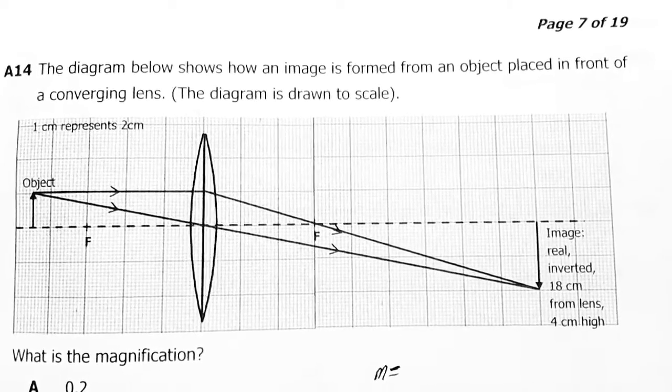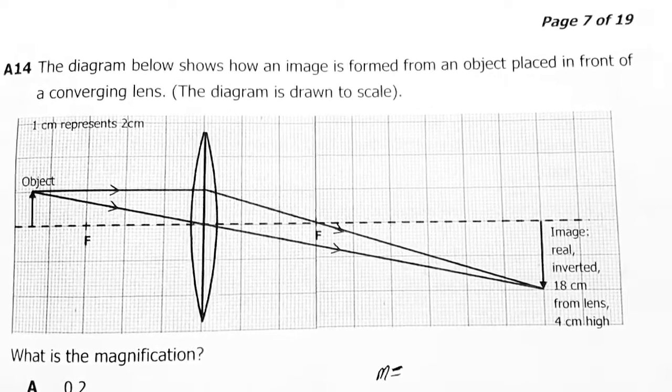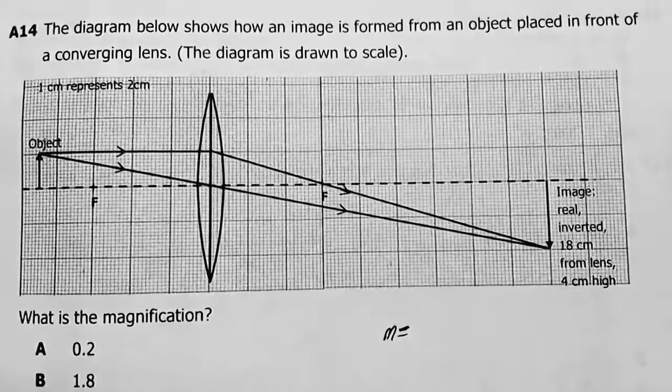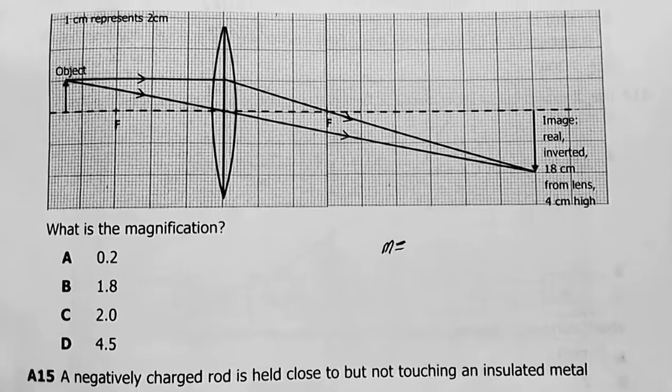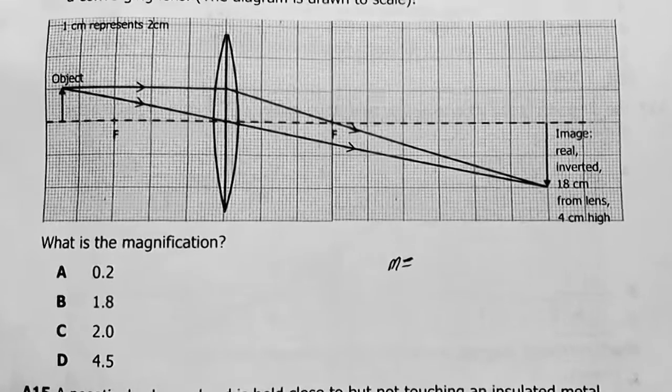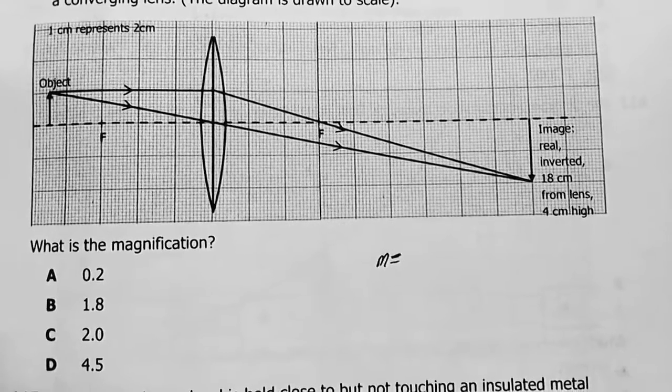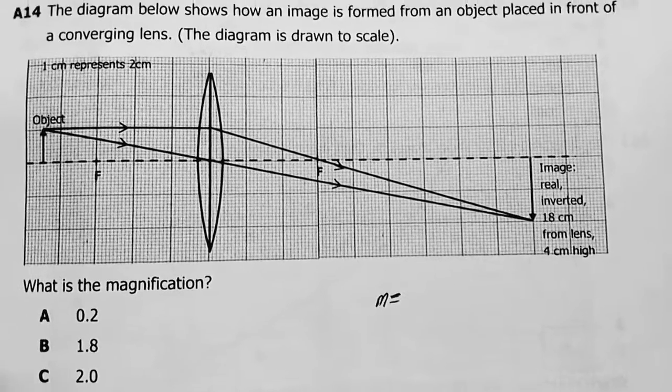Question 14: The diagram below shows how an image is formed from an object placed in front of a converging lens. The diagram is drawn to scale. What is its magnification? Oh, I didn't solve this one.